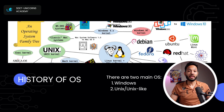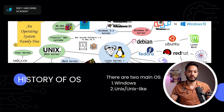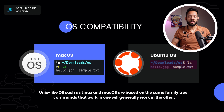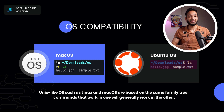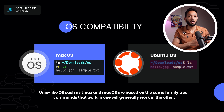These two are primarily the main OS families: Windows, and UNIX or UNIX-like systems. In UNIX you have Mac OS, and in UNIX-like you have Linux and BSD. When it comes to command compatibility, since UNIX-like systems such as Linux and Mac OS are based on the same family tree, commands that work on one will most likely work on the other as well.